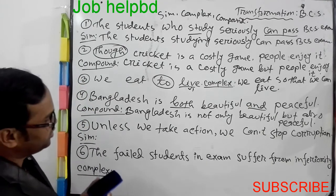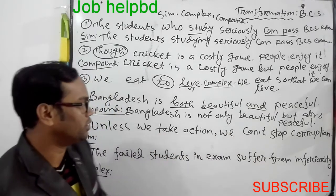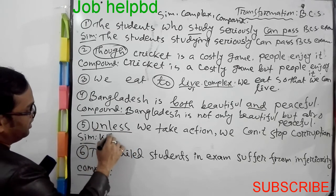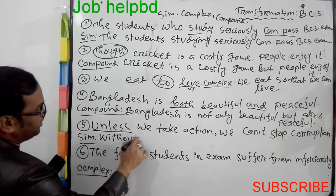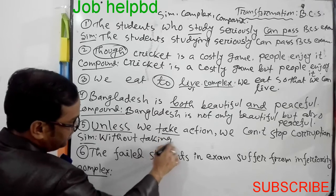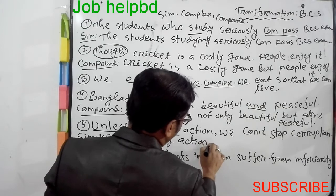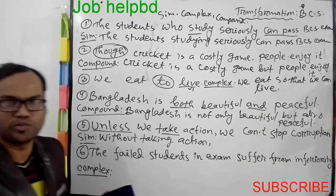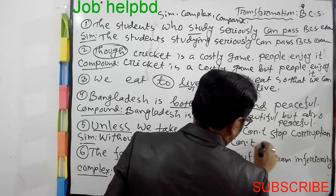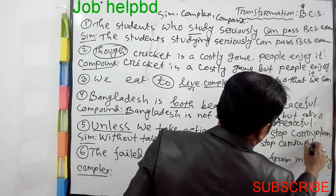Unless we take action, we cannot stop corruption. 'Unless' is used as a conjunction symbol — without it, the meaning changes. Without taking action, we cannot stop corruption. This is the principal clause: we cannot stop corruption.